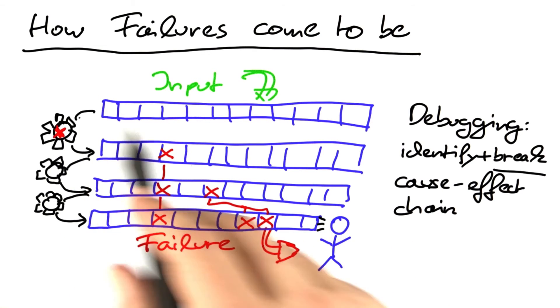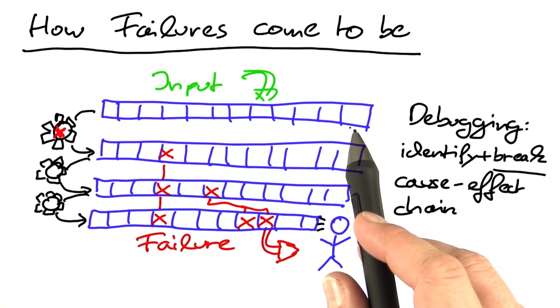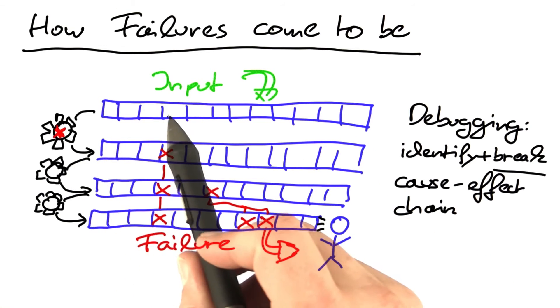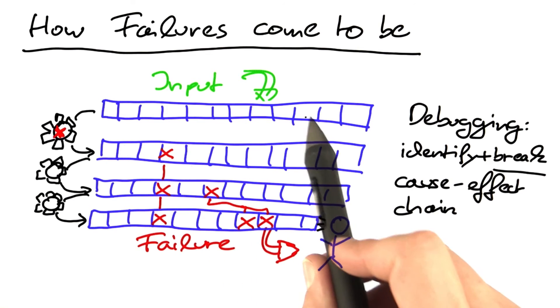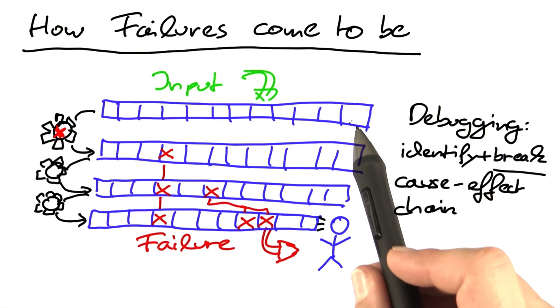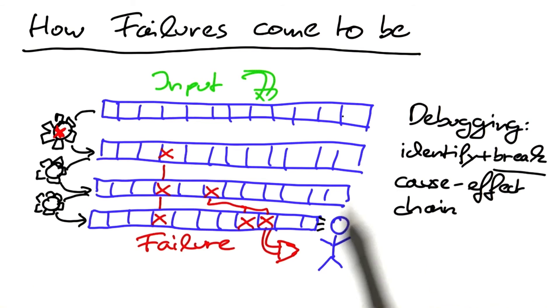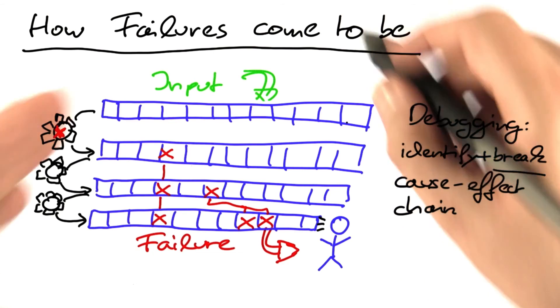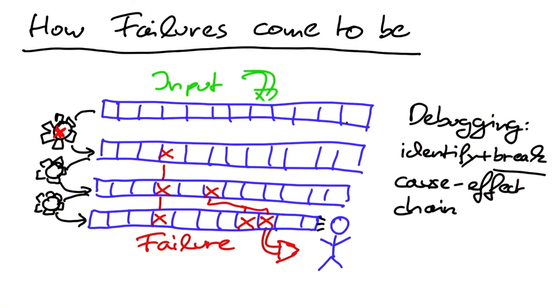But then the next problem is these states are huge. So over here we have 12 variables. Cute. In reality, we have tens of thousands of such variables. And not only do we have tens of thousands of such variables, we also have tens of thousands of steps between defect and failure.